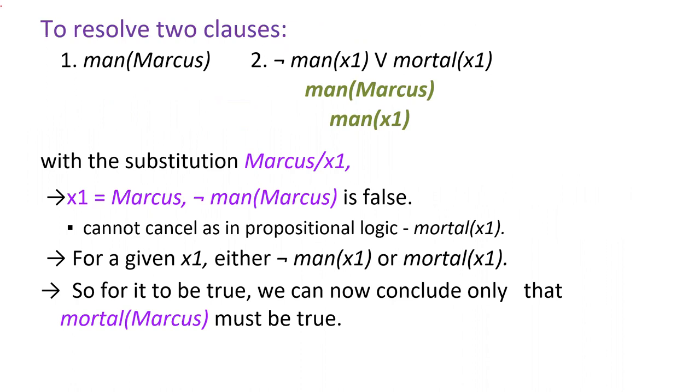To resolve two clauses, for example, man of Marcus and negation man of x1 or mortal of x1, you can write this with the substitution Marcus for x1. After substituting x1 to Marcus, if x1 equals Marcus, negation man of Marcus is false. You cannot cancel in propositional logic as in propositional logic. For a given x1, either negation man of x1 or mortal of x1 must be true. So for it to be true, we can now conclude only that mortal of Marcus must be true.